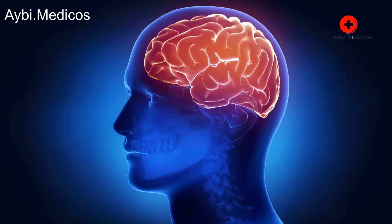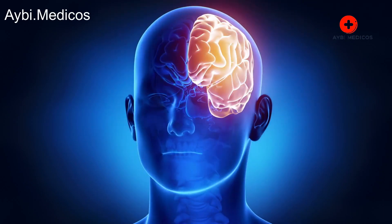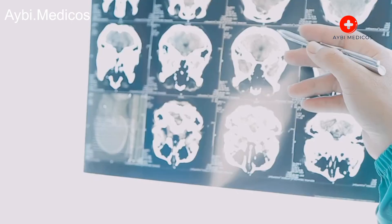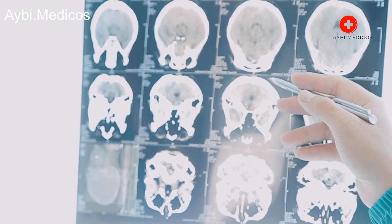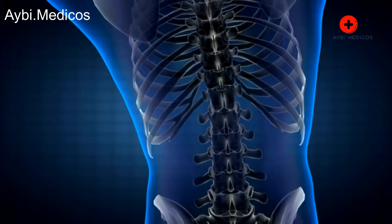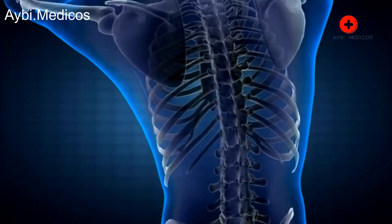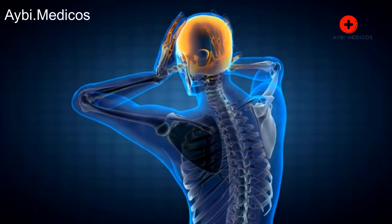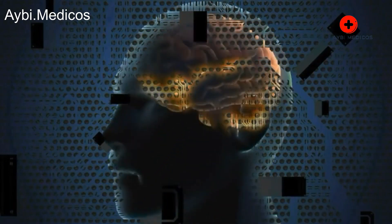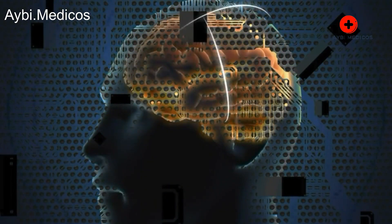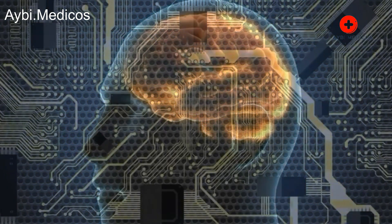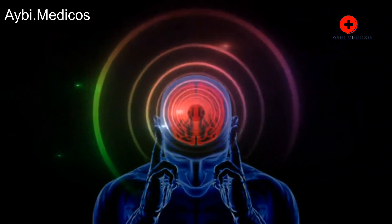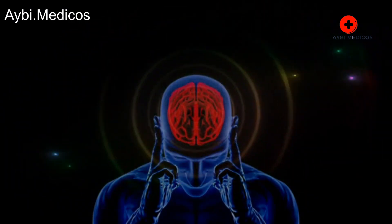A brain tumor is an abnormal growth of cells within the brain or the surrounding tissues. There are two main types of brain tumors: primary and secondary metastatic tumors. Primary brain tumors originate from the brain itself or its surrounding structures, such as the cranial nerves or the meninges' protective layers covering the brain. These tumors can be either benign, non-cancerous, or malignant cancerous. The exact cause of most primary brain tumors is not well understood, but certain risk factors and genetic mutations may contribute to their development.